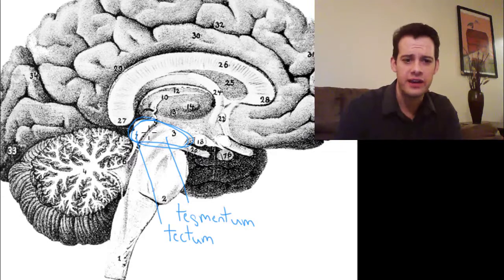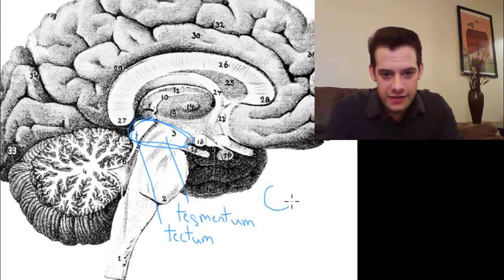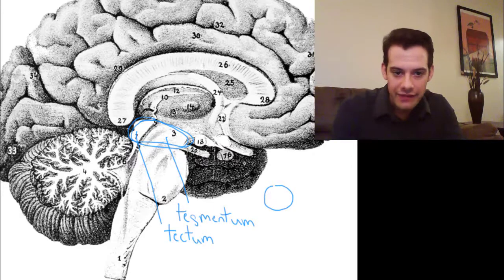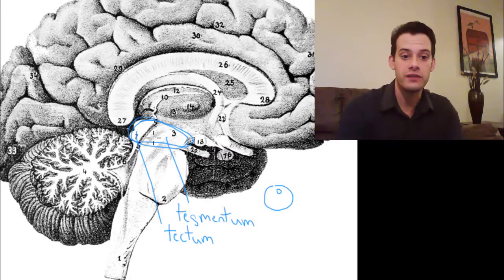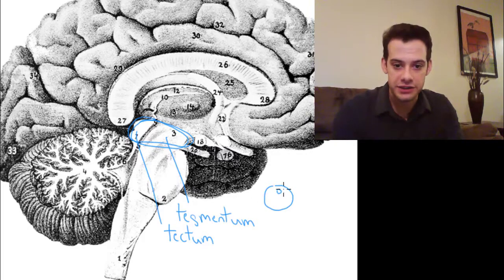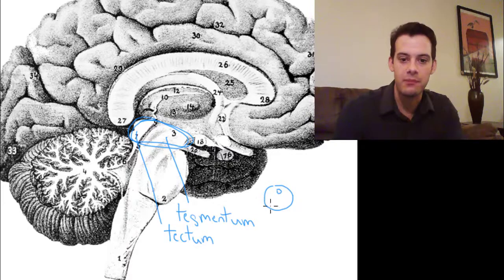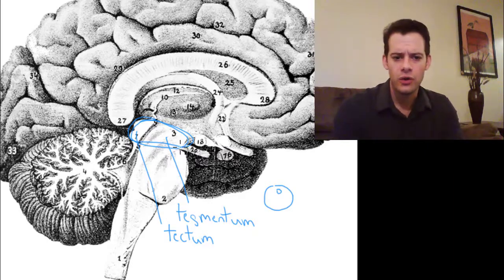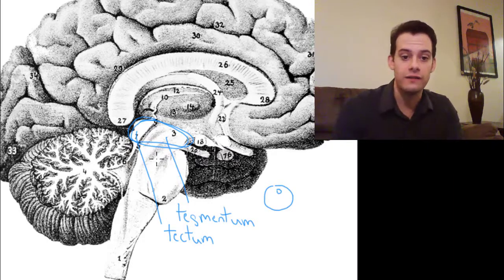An important thing to notice is that it looks like the tectum and the tegmentum are completely separate because we have this channel running through. In fact, that's just the nature of this cutaway view. We're actually looking at a column and that channel there is sort of like a hole running through the column. So this is called the cerebral aqueduct but I bring this up just to remind you that these areas aren't separated. They're actually part of the same column. It's just hard to see that from this view so we should think about some other views of the brainstem.